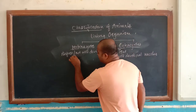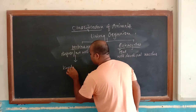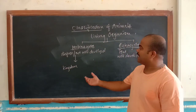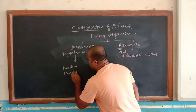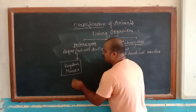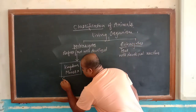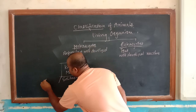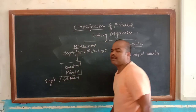In prokaryotes, only one kingdom is included or categorized. It is known as Monera. Monera means solitary, or in simple language, it is a single-celled organism.